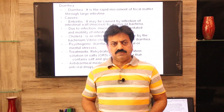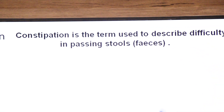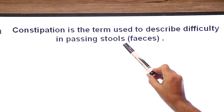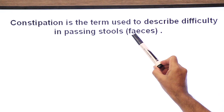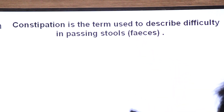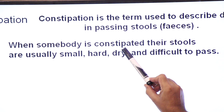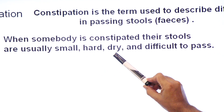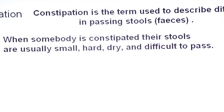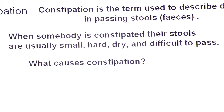After diarrhea, we will study constipation. Constipation is the term used to describe difficulty in passing stool, undigested food, or feces. It is a condition in which the affected person has difficulty passing stool or feces from the body. When somebody is constipated, their stools are usually small, hard, dry and difficult to pass. What causes constipation?